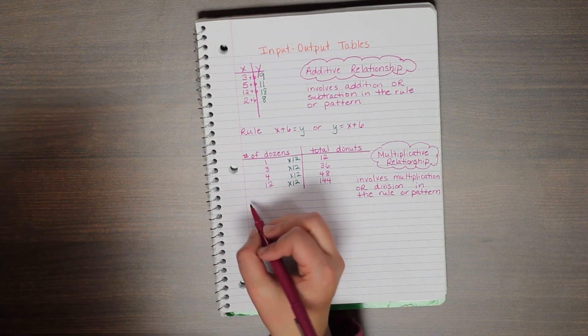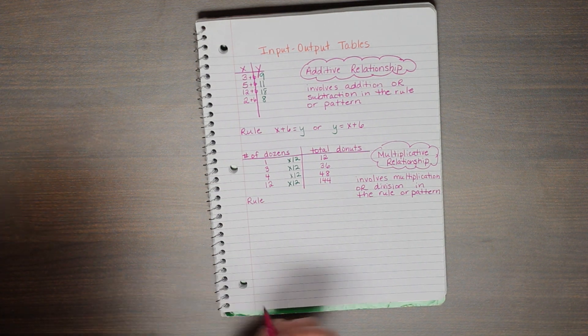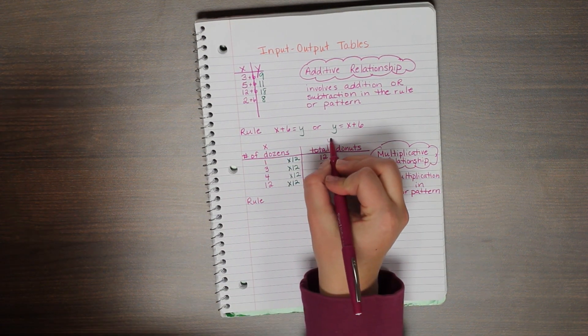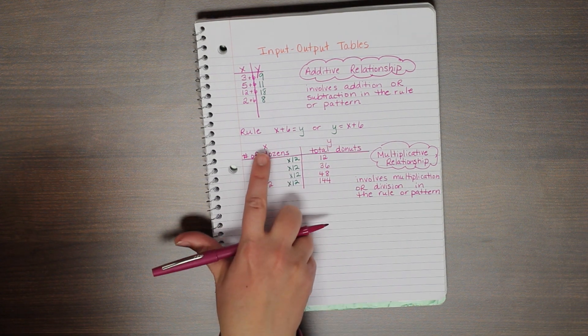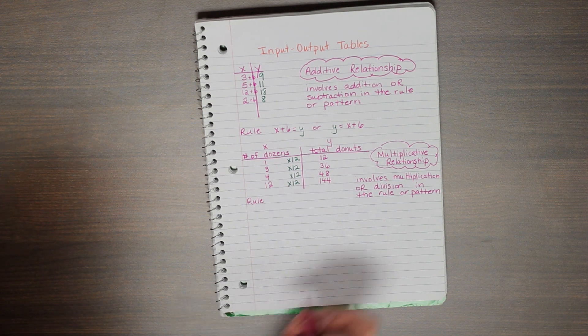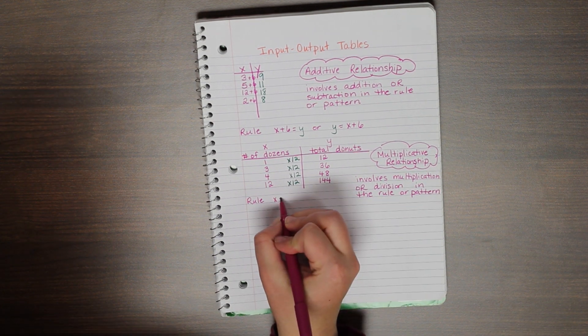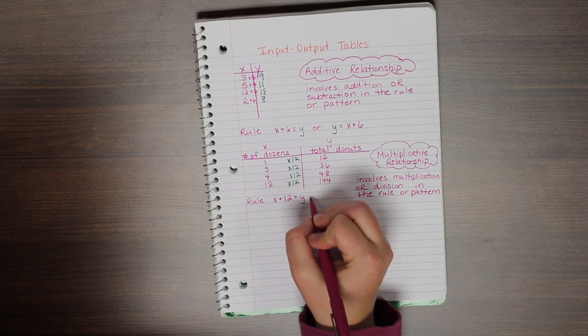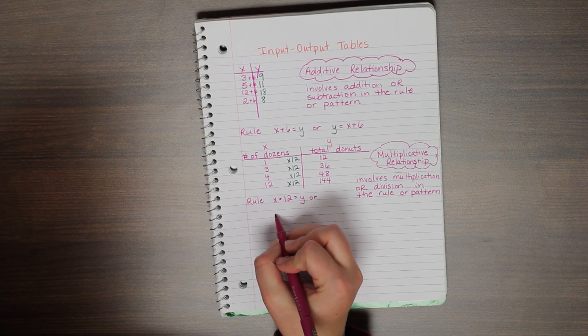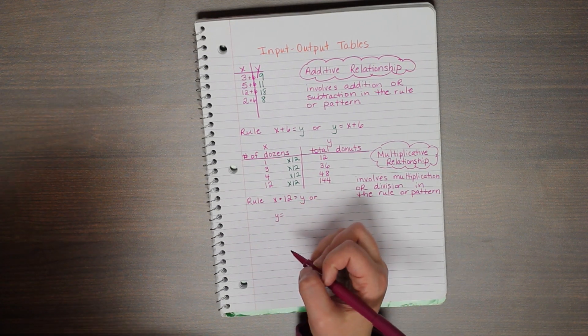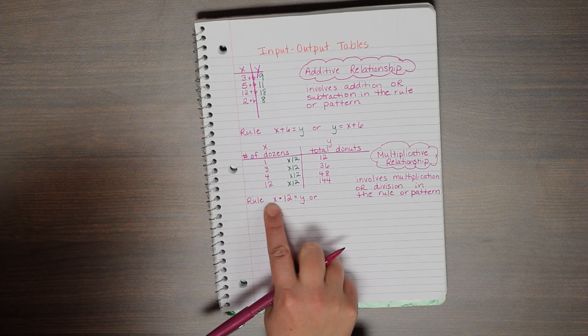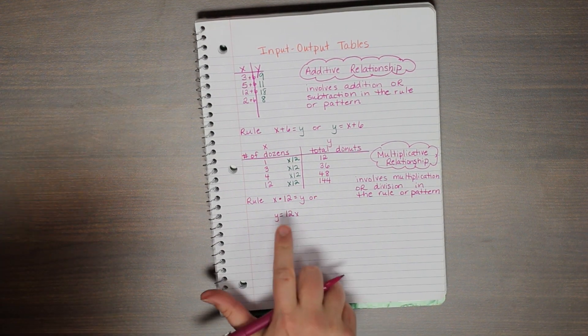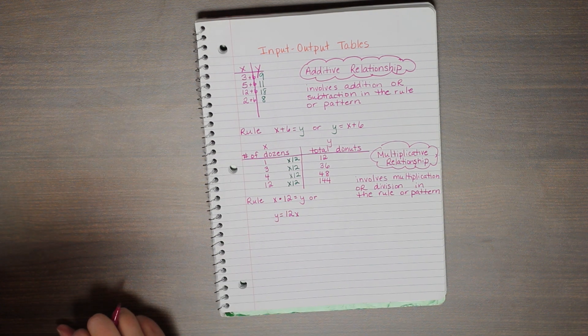So just like we did on the last one, we want to write our rule. And so this time, what am I doing to my number of dozens? We can say our number of dozens is my x and my total doughnuts is my y. So what am I doing to x to equal y? I'm doing x times 12 equals y. So my rule I can say is x times, I can use that dot to represent multiplication or times, 12 equals y. Or I can reverse it around starting with the y, y equals, and when I'm showing multiplication between a number and a variable, I put the number first, so 12, and then I put the variable right next to it, x. This means 12 times x. So these are the two ways that I can write that rule.